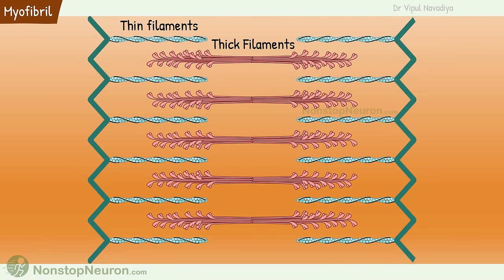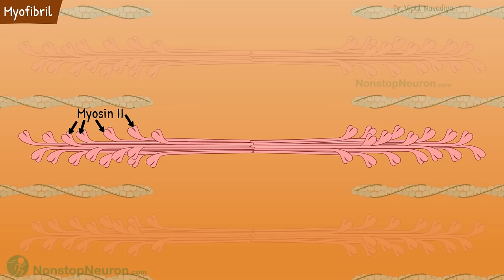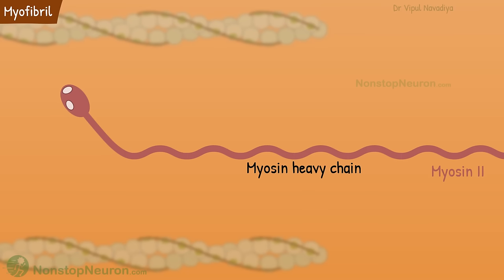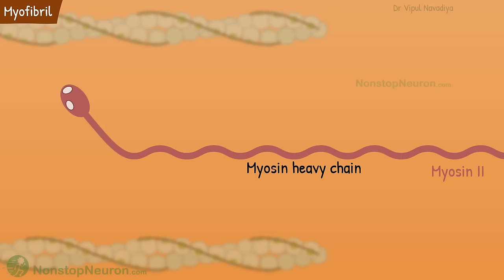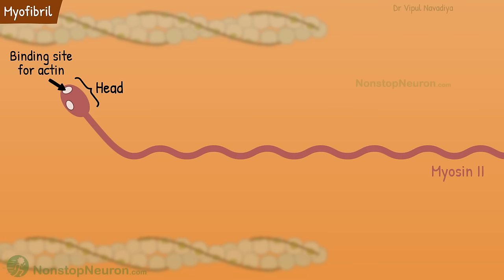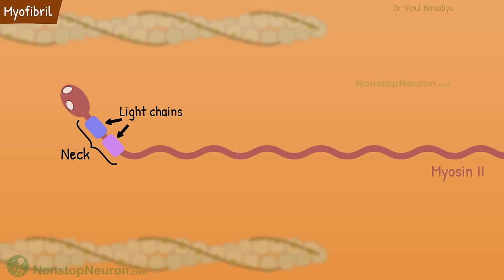Moving to the thick filament — they lie in between and partially interdigitate with thin filaments. Structurally, they are an assembly of hundreds of myosin II molecules. Myosin II molecule in turn is made up of two identical heterotrimers. Individual trimers consist of a myosin heavy chain and two light chains, namely an essential light chain and a regulatory light chain. The heavy chain has a head, neck, and rod. The head has a binding site for actin at the tip and a binding site for ATP at the middle. Next is the neck region. Both the light chains are bound to this portion. The light chains mechanically stabilize the neck and are also involved in regulation of cross-bridge interaction.